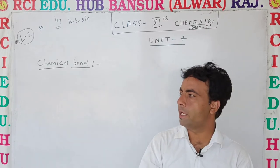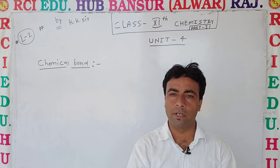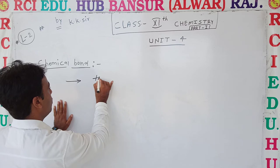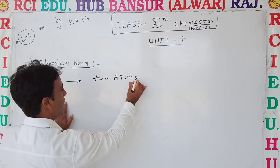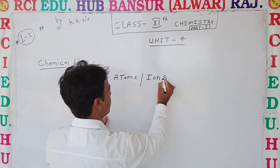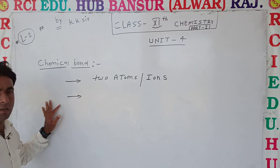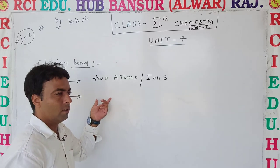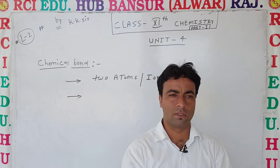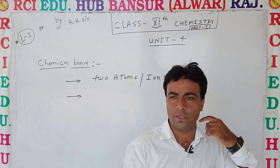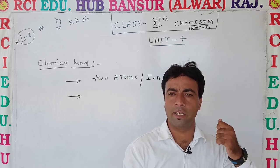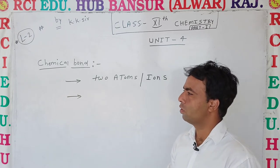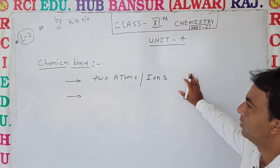First of all, what is the definition of chemical bond? Chemical bond formation takes place between two atoms — it may also be ions. So if two atoms or two ions come together by attraction and sharing of electrons, a strong connection forms. That is called, in one word, a chemical bond.